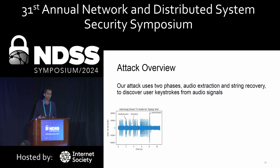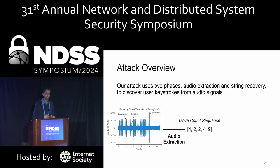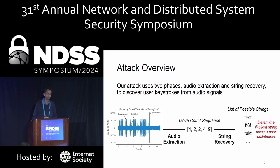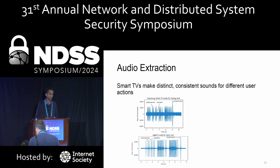Despite these challenges, it is indeed possible to construct an end-to-end attack that goes from the raw audio of smart televisions and produces a list of the likeliest strings typed by the user. Our attack breaks the problem into two phases. The first is audio extraction, which uses the raw audio to construct an intermediate state called a move count sequence, characterizing the user's movement on the keyboard. From these movements, we feed it to the second phase — string recovery — which finds possible strings matching this interaction on the keyboard with a known layout, and ranks them according to a string prior distribution.